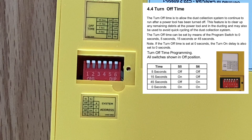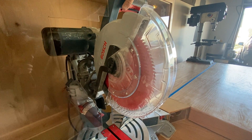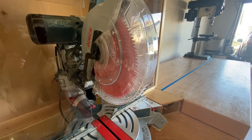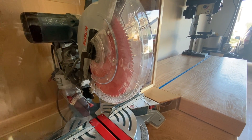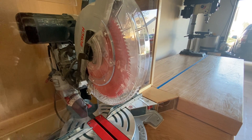Switches 5 and 6 change the turn off setting on the dust collector from 0 seconds up to 45 seconds. I left this also on the default setting, turning off the dust collector after 5 seconds after the tool is shut off. Here's a quick demonstration of these components working together to automate the dust collection system.